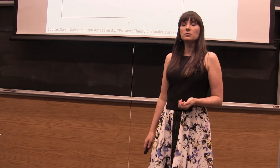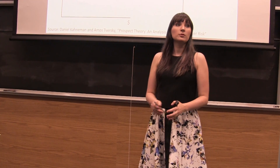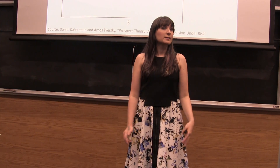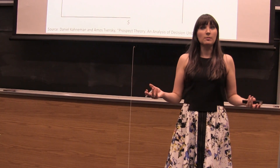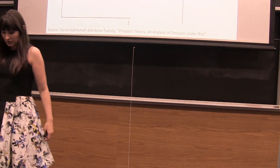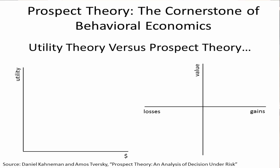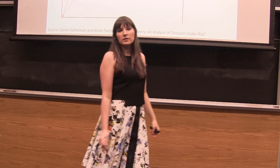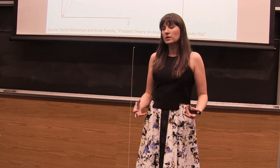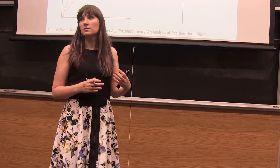So if we're going to actually describe what people do — rather than what people should do, or what that rational economic man, that Spock, would do — we need some sort of alternative to the expected utility model. We already did the expected utility model. What prospect theory brings in is an alternative to this. So rather than a utility function, prospect theory says you have what's called a value function.